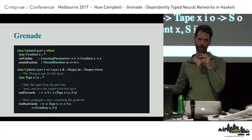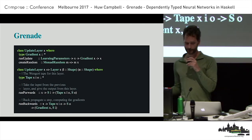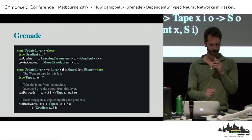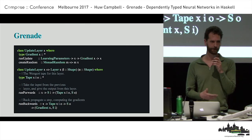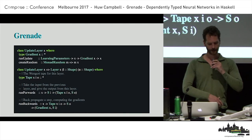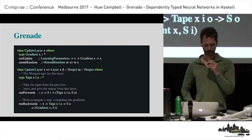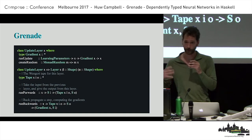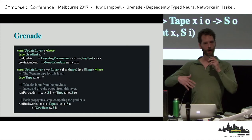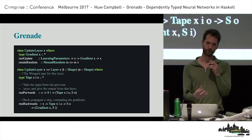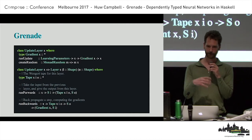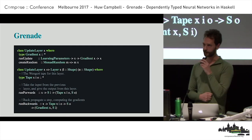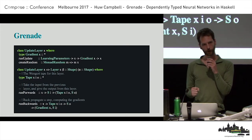Now we can talk about what a layer is in Grenade. It's parameterized by two type classes. The first says: these are the weights, this is the shape of my weights — this is the gradient type of the layer. If you have no learnable parameters, this will be unit. It says: if we want to update our layer given some learning parameters, a layer, and gradients, give me a new layer — that's run_update. I can also create a layer randomly. The second class says I am a layer of a neural network if I can transform data from an input shape to an output shape, and it has a Wengert tape for reverse automatic differentiation.